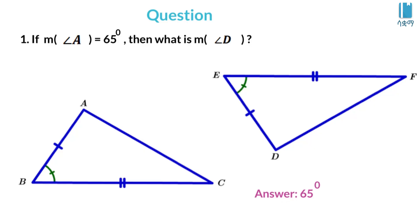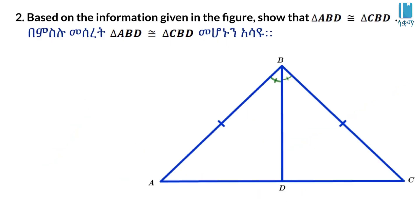The angle of angle A is 60 degrees, so it is 60 degrees. Based on the information given, the figure shows that triangle ABD is congruent to triangle CBD.